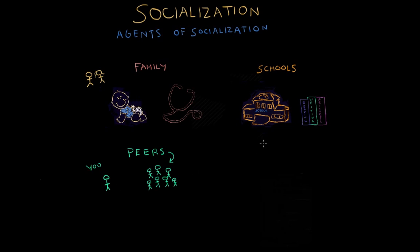Mass media includes things like television, internet, radio, movies, books, and magazines. When children are young, they learn things through mass media that their parents would not even approve of. Today, children are exposed to a lot of content intended for mature audiences, like violent TV shows. Sometimes mass media even enforces gender and other stereotypes. One great example of how mass media is an agent of socialization is children's books.